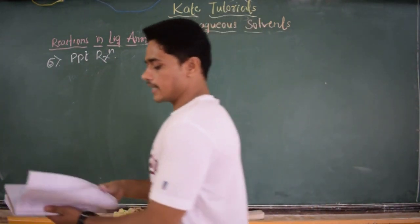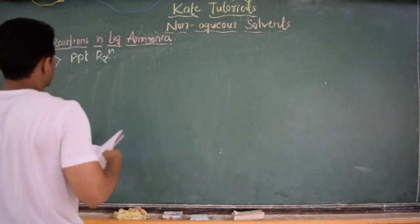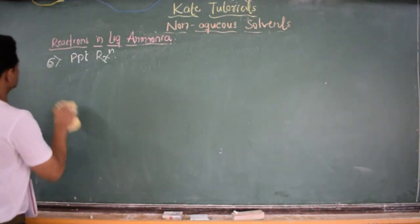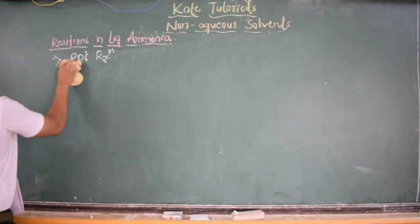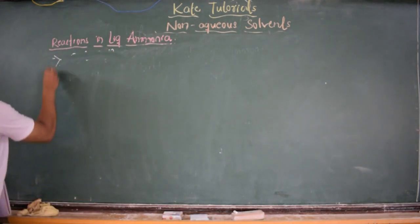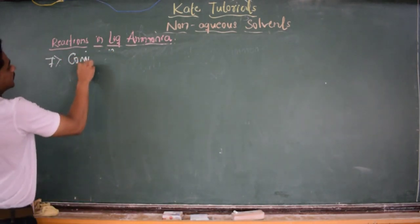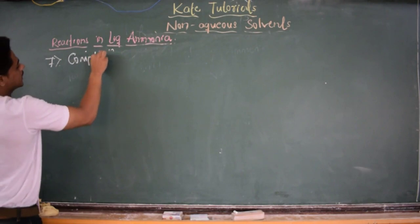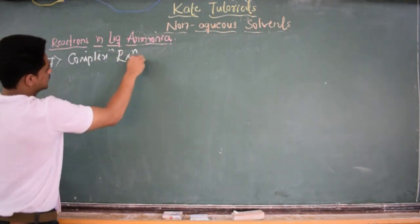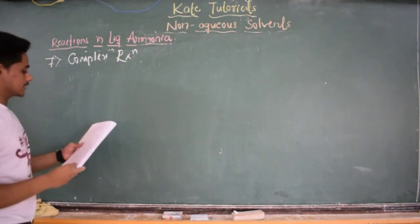The next reaction of liquid ammonia — that is the seventh reaction — is nothing but complex formation. One complex I have explained in my previous class, and in this class I am going to consider only one example.